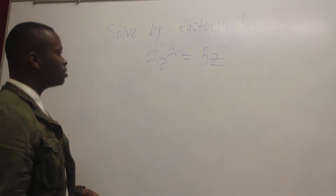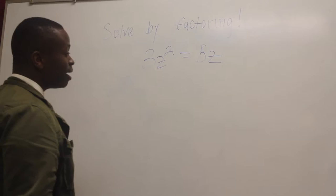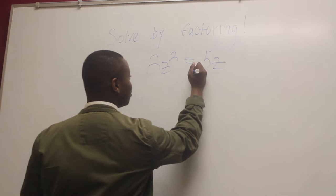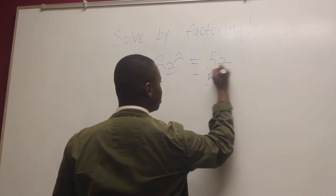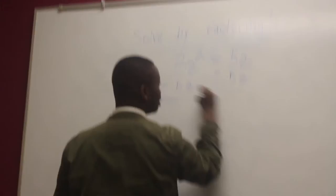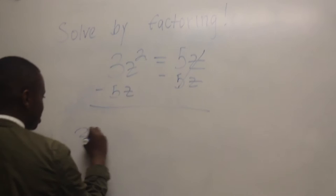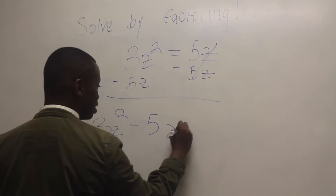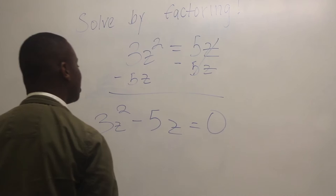Our next problem will be solving by factoring. The problem is three Z squared equals five Z. First, you're going to set the equation equal to zero. You subtract five Z from one side and move it to the other by subtracting five Z — because what you do on one side you have to do to the other. This will leave you with three Z squared minus five Z equals zero.